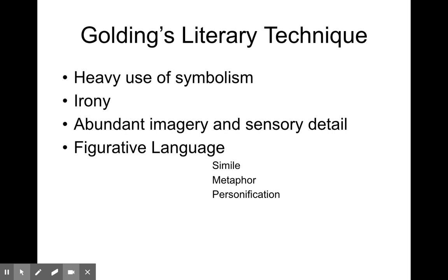Golding's literary techniques are pretty strong in symbolism. There's a lot of irony — the opposite of what you would expect — situational and verbal. There's abundant imagery and sensory detail throughout. You are going to sense the heat on the island and sense the sights and the smells. There's a lot of figurative language: similes, metaphors, personification. Golding uses these things to bring us into the island, to set the mood and the tone, and to enhance some of the themes through the conflict in the plot.